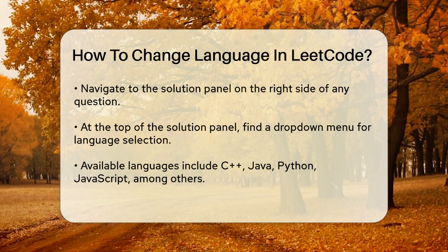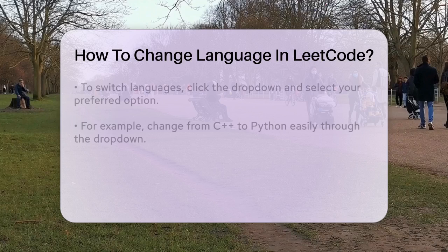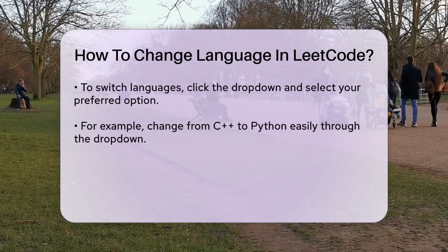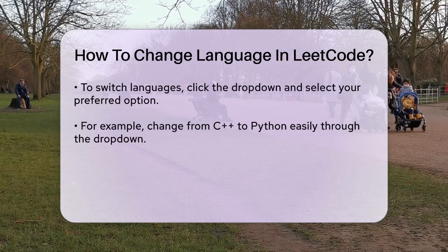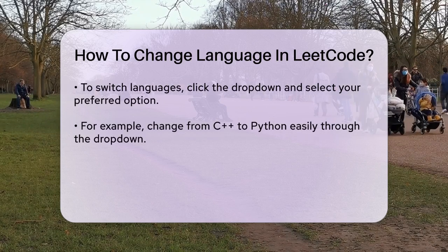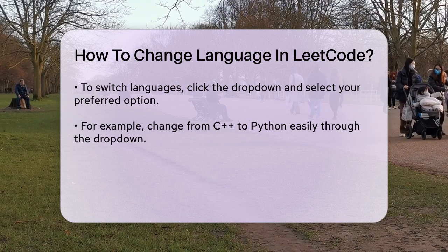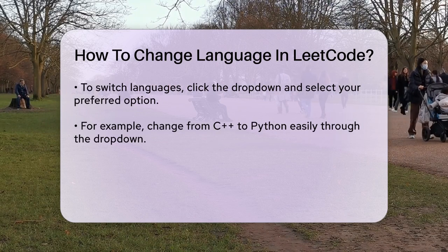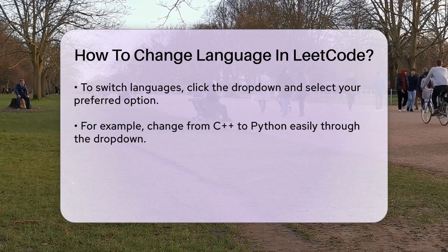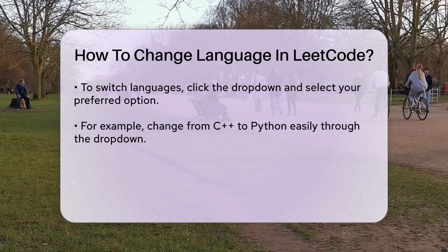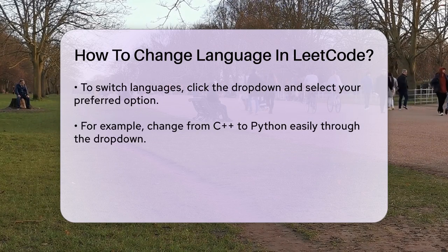For example, if you're working on a problem and the default language is set to C++, but you prefer to solve it in Python, simply click on the drop-down menu and select Python. This will change the language settings for that particular problem.